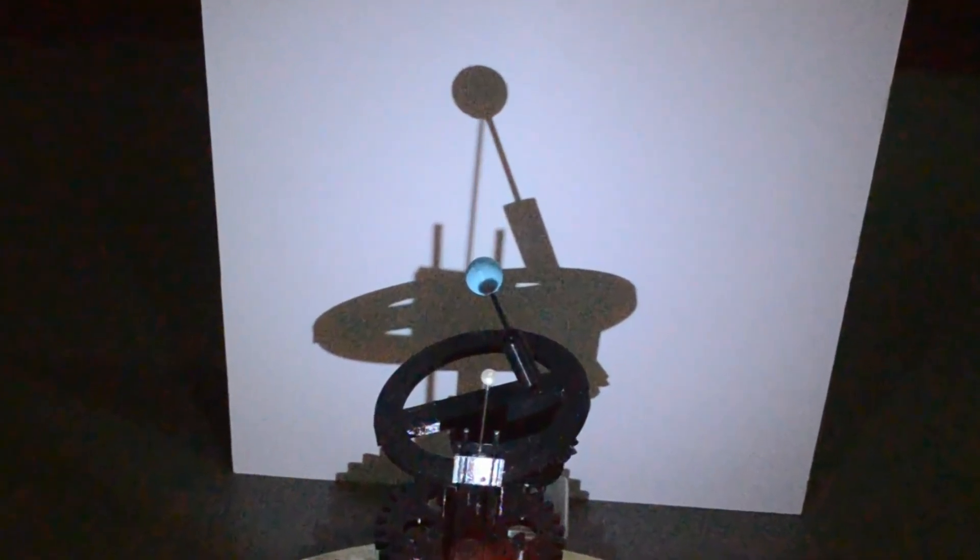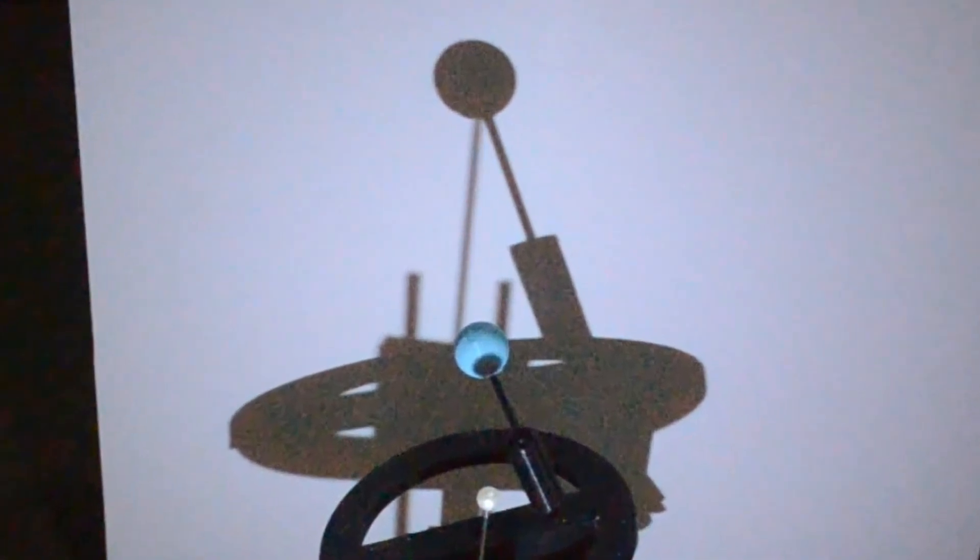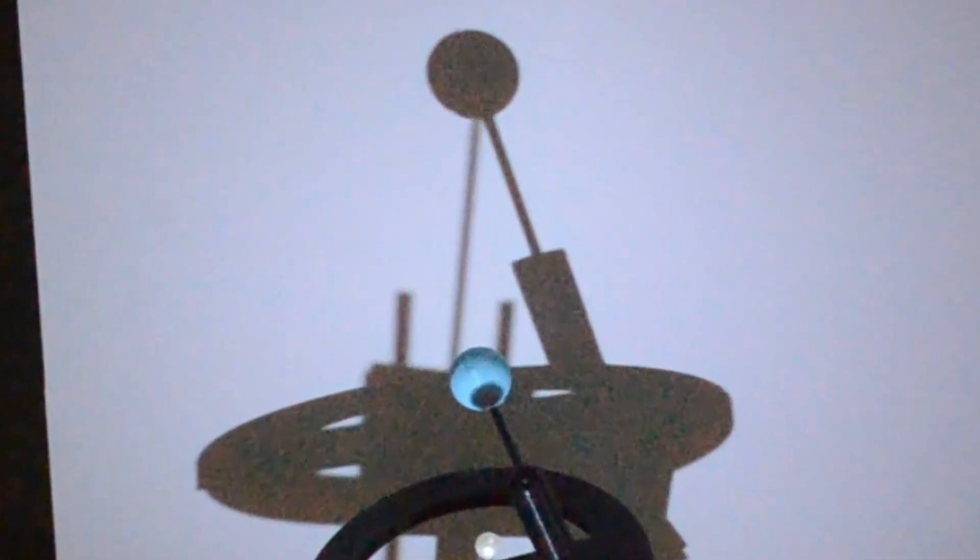Eclipses may not always happen at the same place again immediately, as the orbit of the Moon around the Earth is tilted.